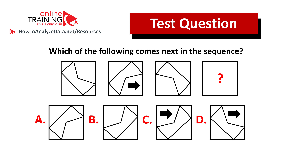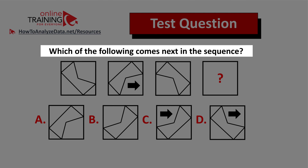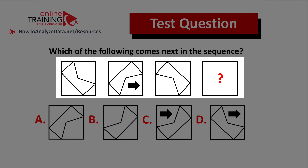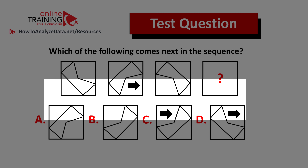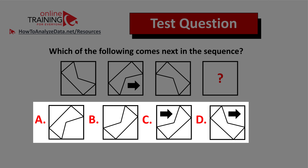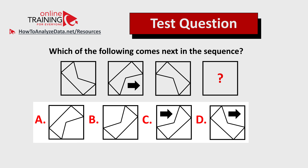Here's a question for you to try on your own: which of the following comes next in the sequence? You're presented with four different squares, each with a figure inside, and four choices A, B, C, and D. Pause the video and give yourself 10 to 15 seconds. Always look for patterns. If you've figured out the answer, post it with your rationale in the comment section for feedback.